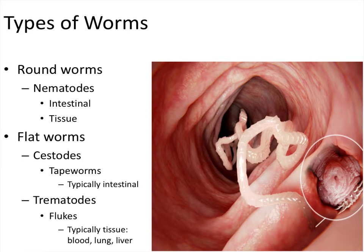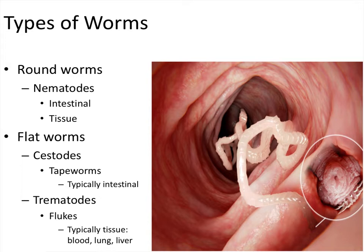There are the roundworms and there are the flatworms. Roundworms are also called nematodes, and these types of worms infect primarily the intestines, but they can also infect other types of tissues as well. I kind of divide these into intestinal parasites and tissue parasites. In terms of the flatworms, there are two types: there are the cestodes, which are the tapeworms, which are typically only intestinal. There are some exceptions to that — you're looking at a tapeworm here in this picture — but for the most part, the tapeworms are intestinal parasites.